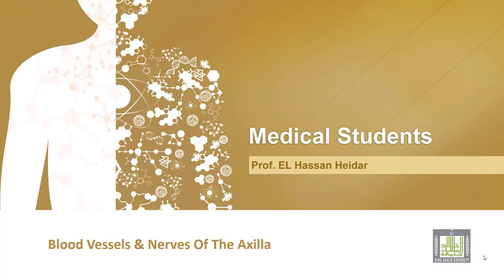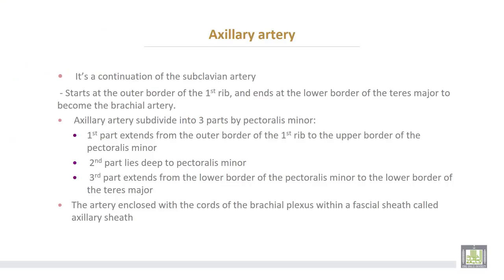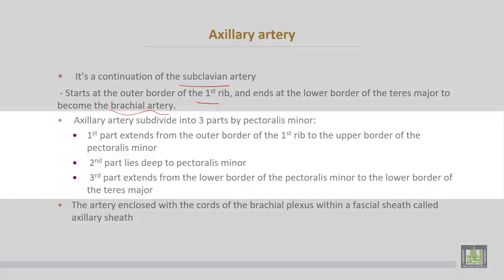Vessels and nerves of the axilla — starting with the axillary artery. The axillary artery is a continuation of the subclavian artery. It starts at the outer border of the first rib and ends at the lower border of the teres major muscle to become the brachial artery. The axillary artery is subdivided into three parts by the pectoralis minor muscle.